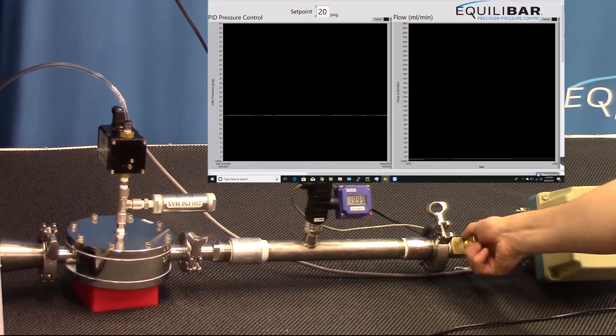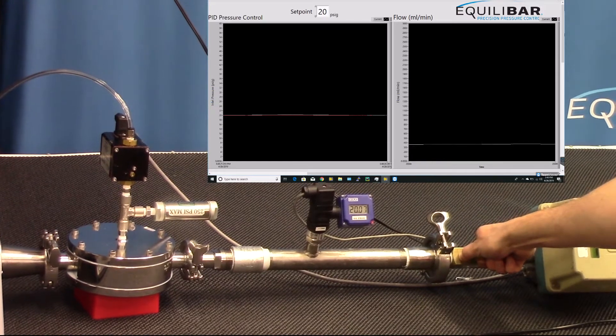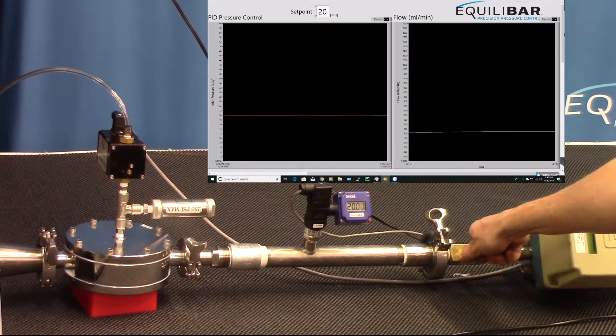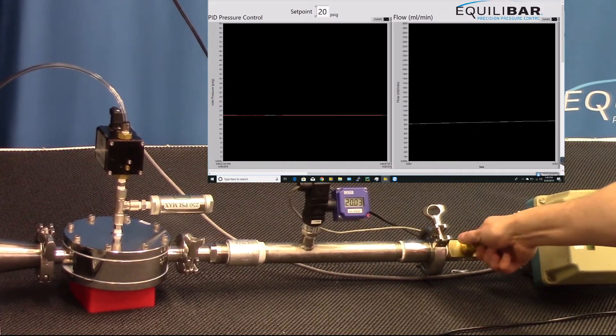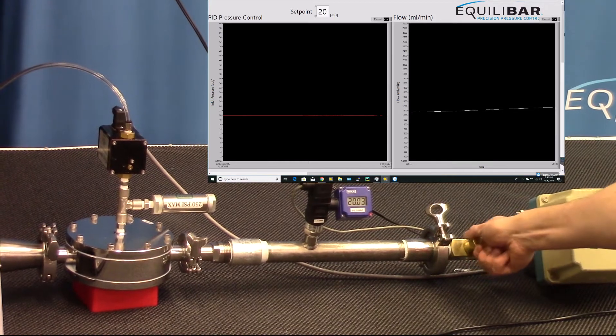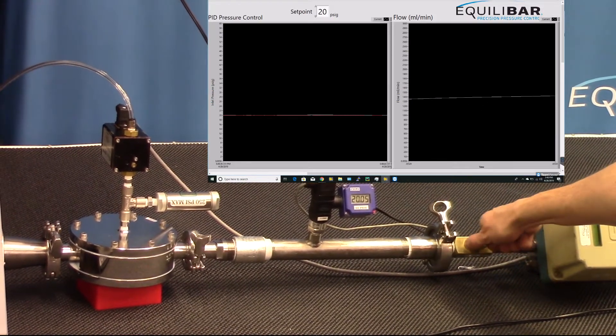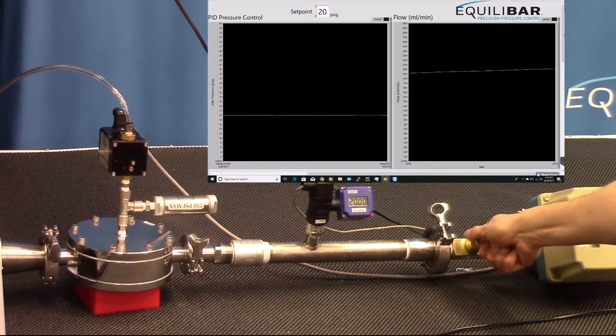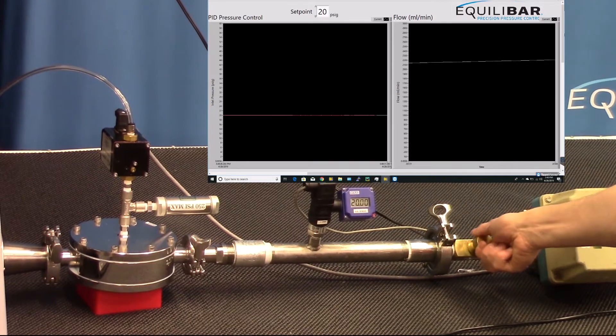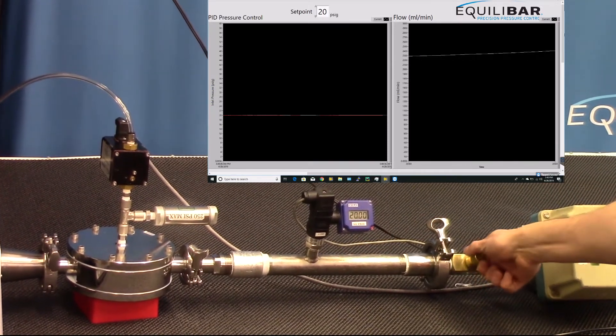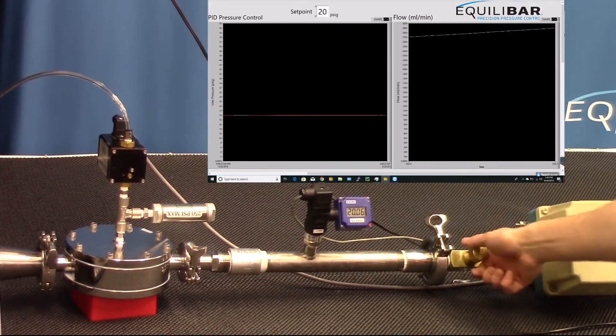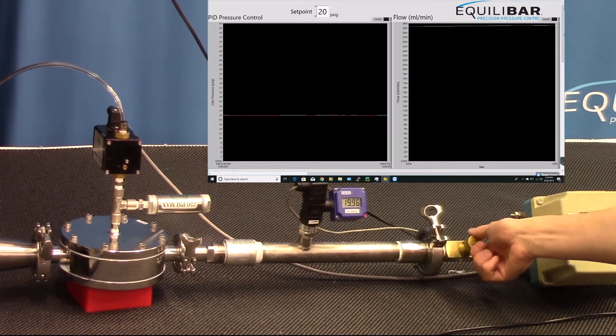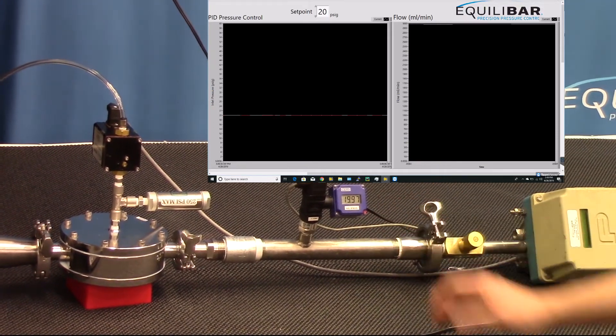We're slowly going to ramp up flow, and as we do, we will see the Equilibar demonstrate stable pressure control. As we approach one liter a minute, we see that the inlet pressure has not changed. We will again slowly increase to almost three liters a minute before we max out the range of this flow meter. Now we're reading at about three liters a minute, and we can see the inlet pressure has not changed.